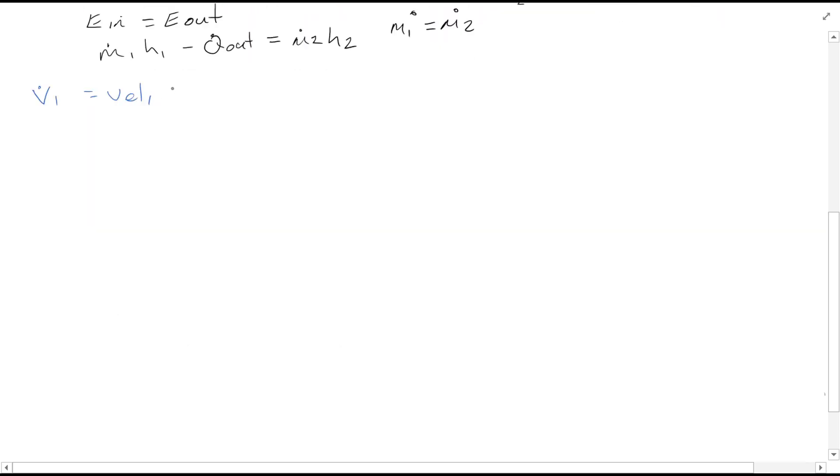Velocity 1 times area, as we said previously, area is equal to pi r squared. Therefore we can find V1 is equal to 18 times pi times 0.2 squared, converting from centimeters into meters to keep the units consistent, which equals 2.2628 meters cubed per second.